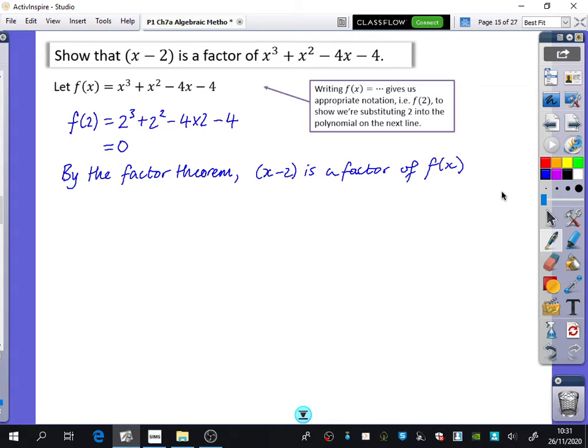Substitute in the value and get 0 for one mark. The second mark is from this sentence of saying, by the factor theorem, this is a factor. Or therefore, this is a factor. You have to say that sentence because otherwise the examiner is like, OK, you've subbed in and got 0. Do they even know why that's important that it's equal to 0?